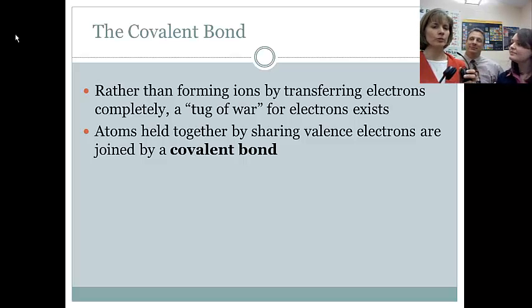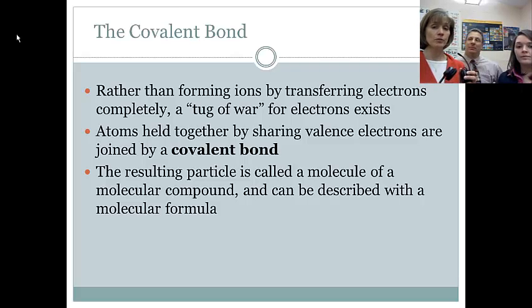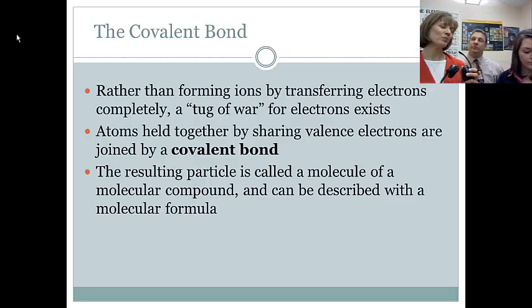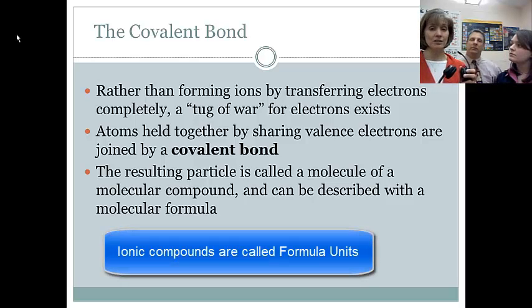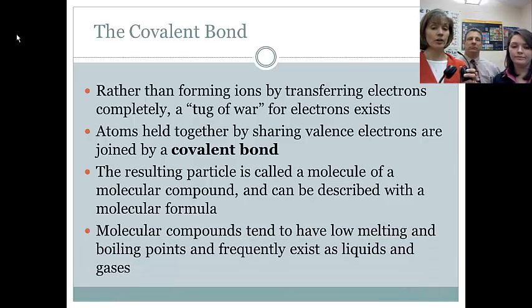You probably remember some of this from your biology class. When a covalent bond forms, we end up with something called a molecule or a molecular compound. We do tend to misuse that term molecule. A lot of times we throw that around when we're talking about ionic substances and we really shouldn't be. But now we can use molecule all we want because we are talking about atoms that are joined together because they're sharing valence electrons.